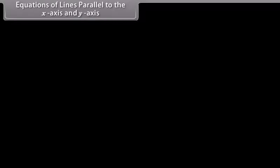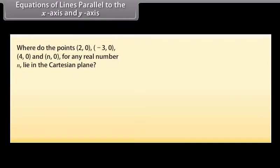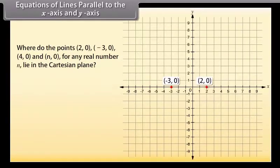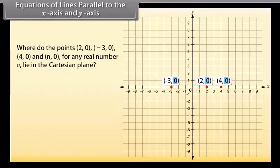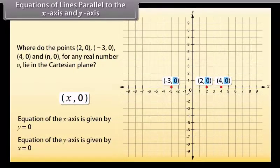Equations of lines parallel to the x-axis and y-axis. Answer one question: where do the points (2, 0), (minus 3, 0), (4, 0), and (n, 0) for any real number n lie in the Cartesian plane? Yes, they all lie on the x-axis. Because on the x-axis, the y-coordinate of each point is 0. In fact, every point on the x-axis is of the form (x, 0). So, the equation of the x-axis is given by Y as 0. Similarly, the equation of the y-axis is given by X as 0.